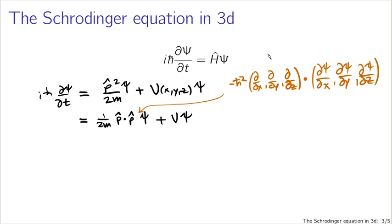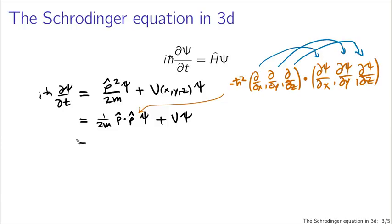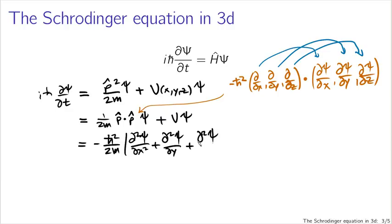Since I'm taking the dot product, the x-component of the operator vector and the x-component of the wave function gradient vector are multiplied together — so I'm acting with the x-derivative on the x-derivative, the y-derivative on the y-derivative, and the z-derivative on the z-derivative, and adding up all results since that's what you do when taking a dot product. The result is minus h-bar squared over 2m times the second derivative of psi with respect to x, plus the second derivative with respect to y, plus the second derivative with respect to z, plus v times psi.